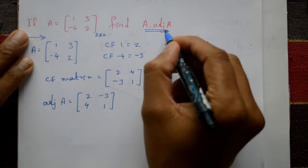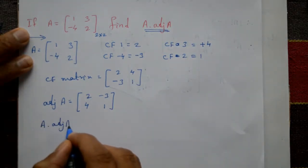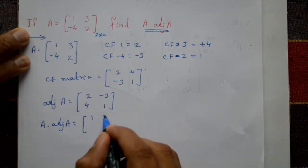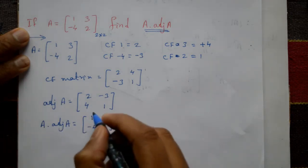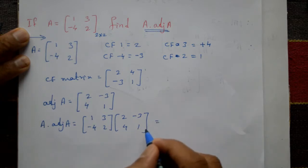But we need A times adjoint of A. Now for the matrix multiplication, matrix A is [1, 3; -4, 2] times the adjoint of A which is [2, -3; 4, 1].